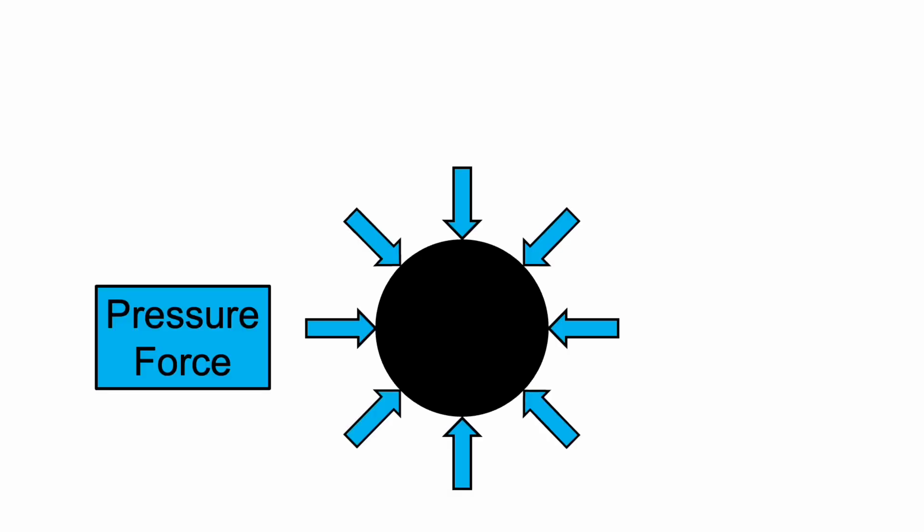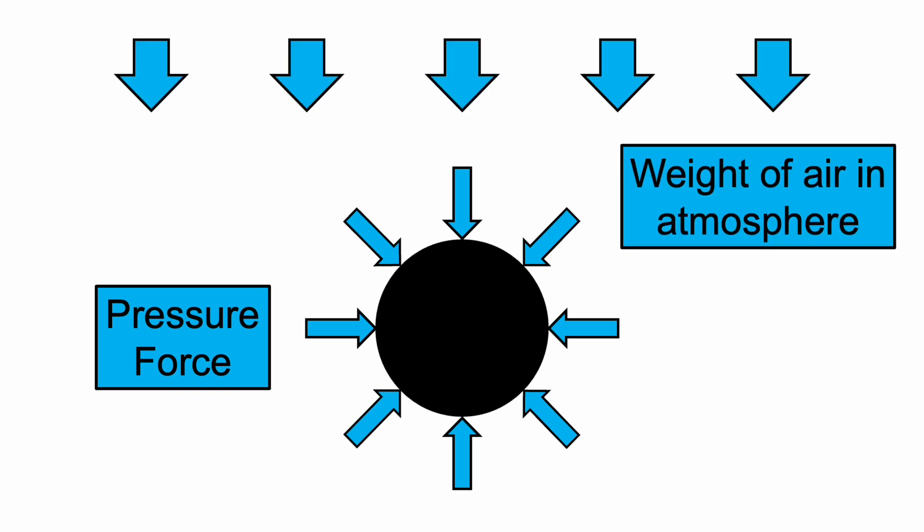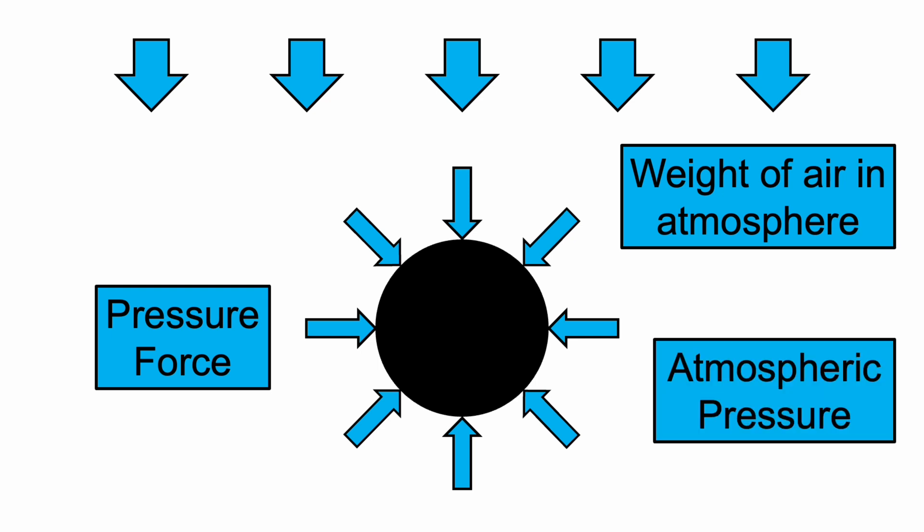We'll start by considering an object — in this case a sphere — surrounded by a fluid, in this case air. Fluids always exert a force on objects immersed in them, and this force is called pressure. The pressure force always acts at a right angle to the surface of the object. Some of this pressure comes from the weight of all the air in the atmosphere above it — this is called atmospheric pressure.